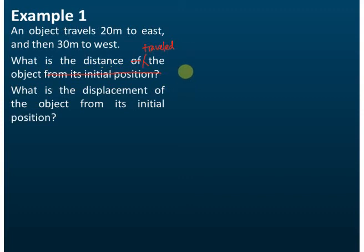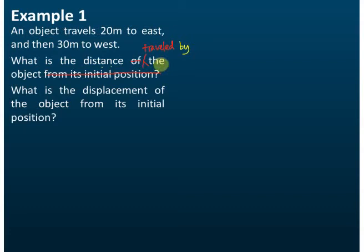Now let's see Example 1. First, I would like you to do some corrections — cancel this off and insert these words: 'What is the distance traveled by the object?' So the question should be 'What is the distance traveled by the object?' instead of 'What is the distance of the object from its initial position?' That's the correction.